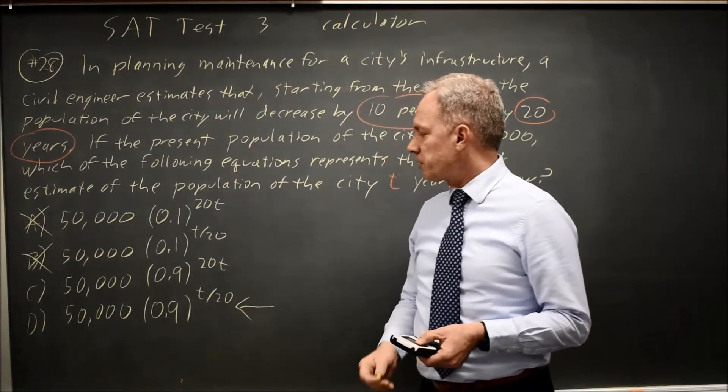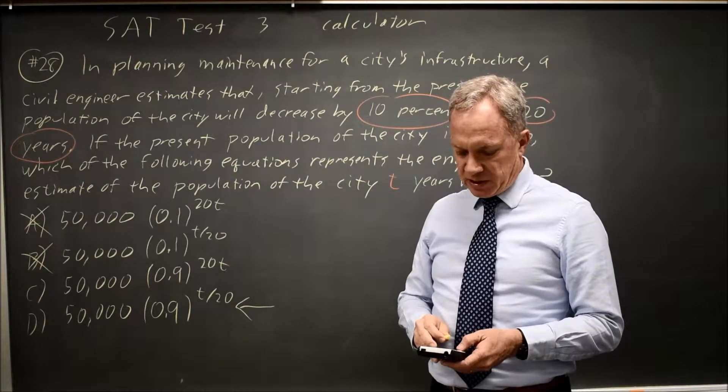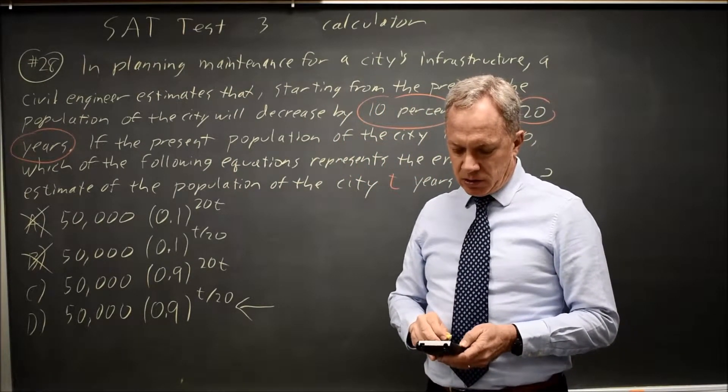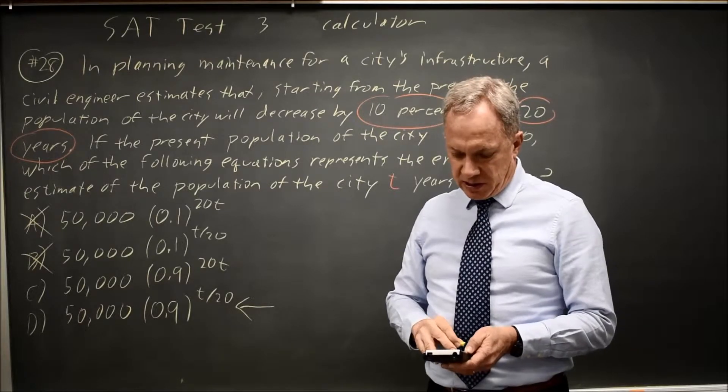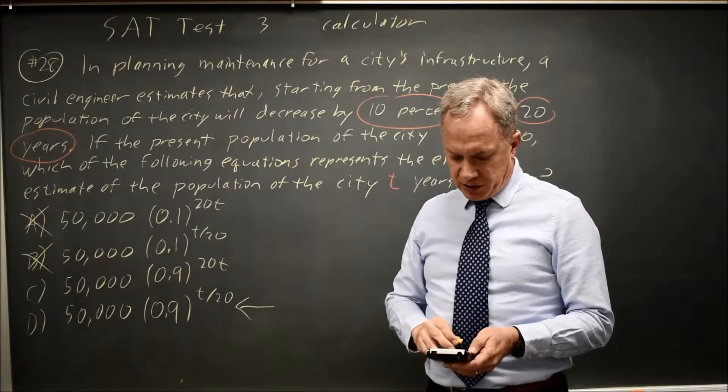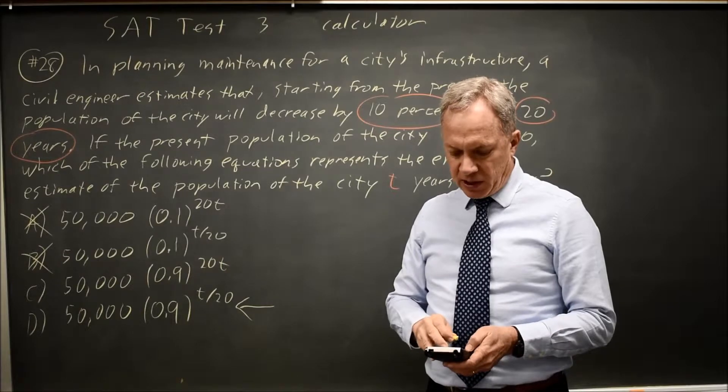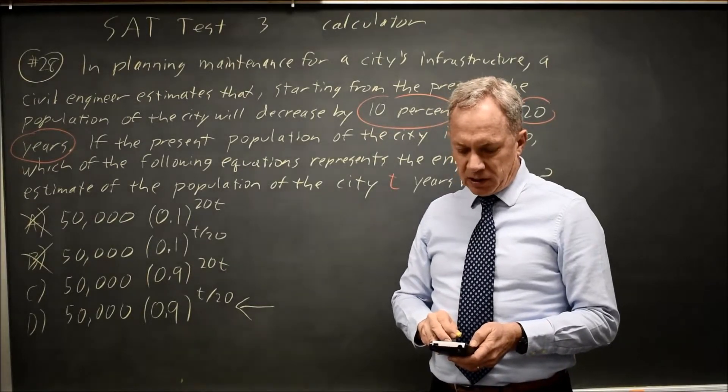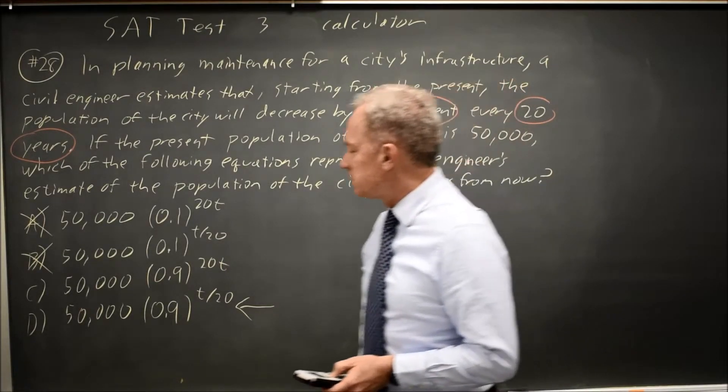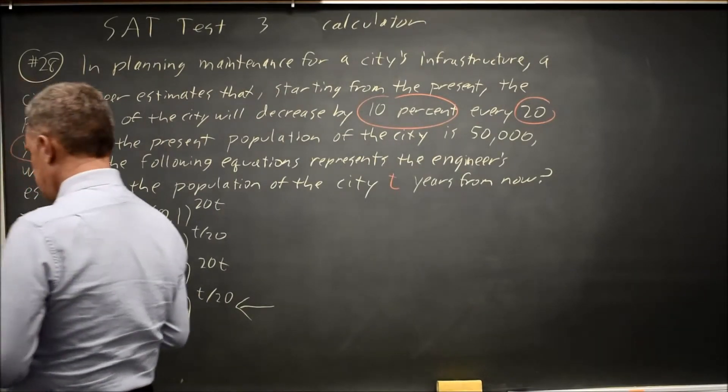Let's try choice C, 0.9 times 20x, and in year 20, my population is essentially 0 again, so choice C is wrong.